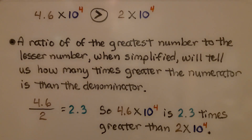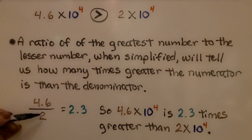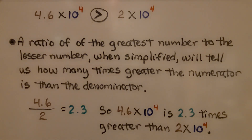Here we have 4 and 6 tenths times 10 to the fourth power and 2 times 10 to the fourth power — both raised to the same power. A ratio of the greater to the lesser will tell us how many times greater the numerator is than the denominator. 4 and 6 tenths divided by 2 is 2 and 3 tenths, so 4 and 6 tenths times 10 to the fourth power is 2 and 3 tenths times greater.